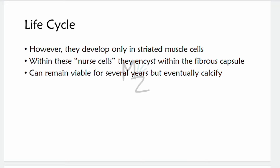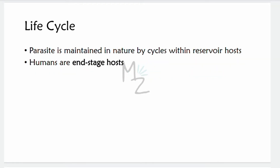Within nurse cells in the striated muscles, the larvae encyst within a fibrous capsule and can remain viable for several years but eventually calcify. The parasite is maintained in nature by cycles within reservoir hosts, primarily swine and rats. Humans are end-stage hosts because infected human flesh is not consumed by other animals, meaning this infection is not transmitted from humans to others.